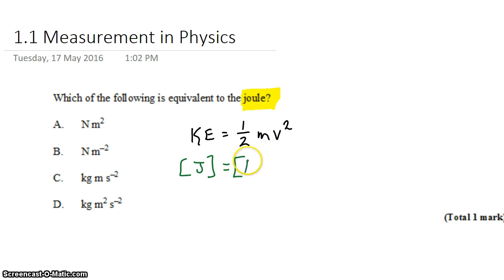And velocity has units meters per second. But we have velocity squared, so that's going to be meters per second all squared. Simplifying on the right-hand side, we get kilograms distributing square in meters squared per second squared. And we see that the Joule is equivalent to a kilogram meter squared per second squared.